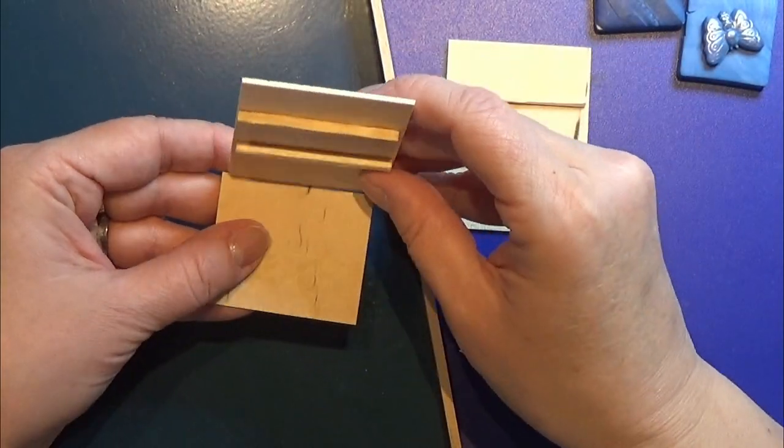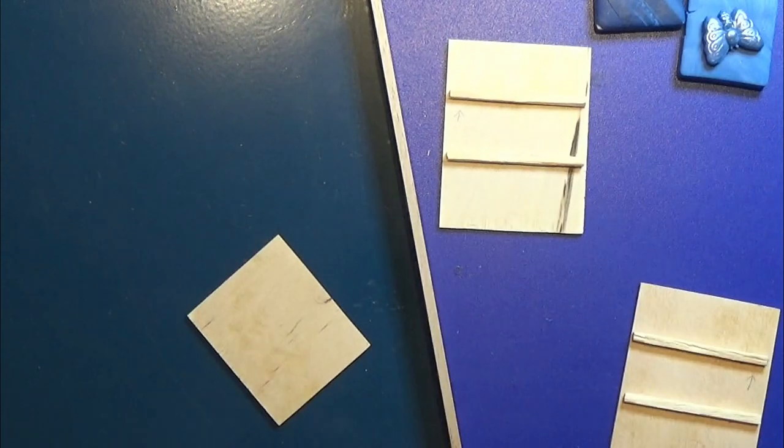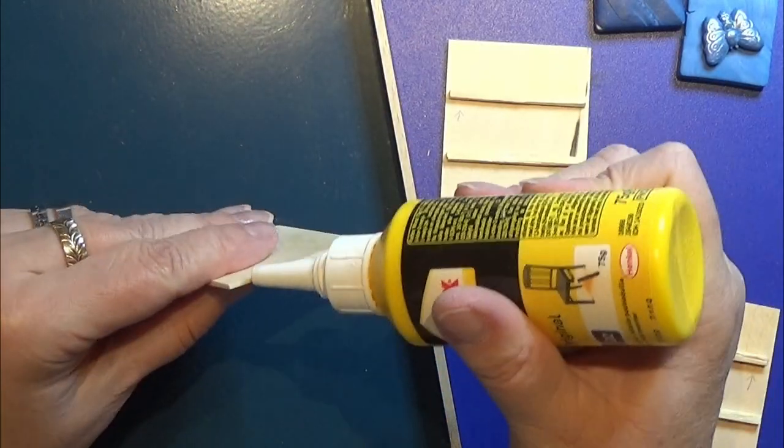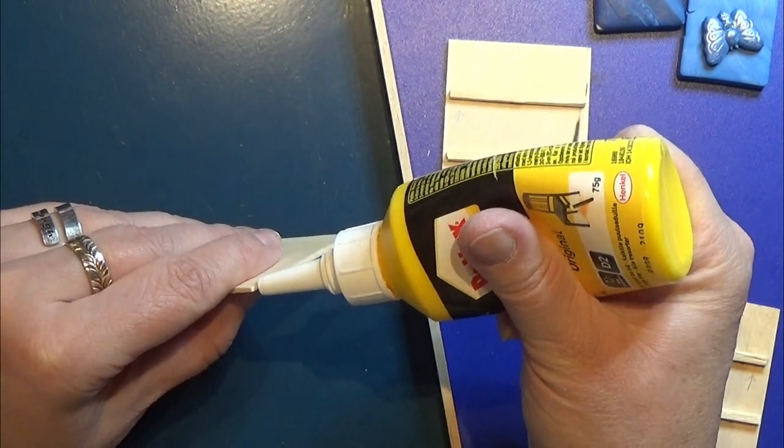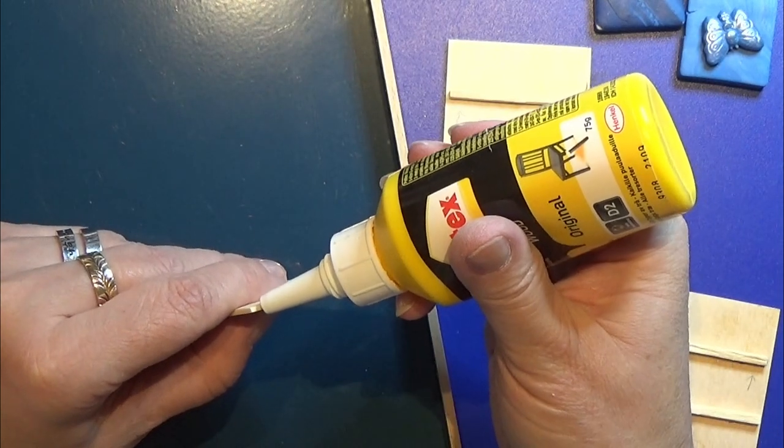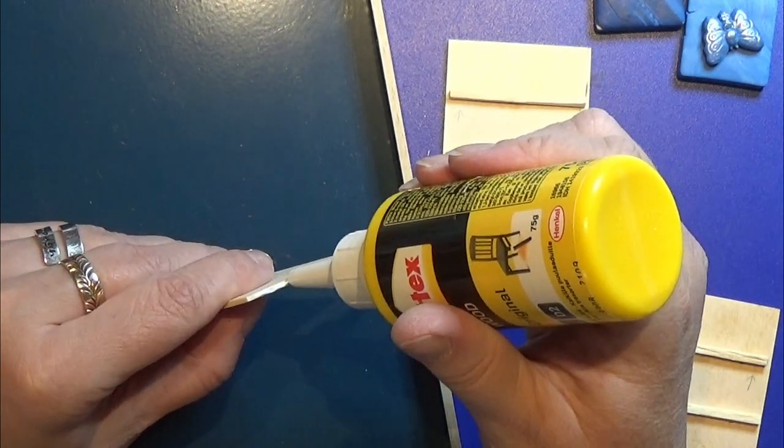Then I glue the two sides on the bottom piece and leave it to dry in my glue jig that I made myself. I will leave a link in the info box below for this glue jig.